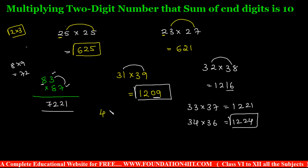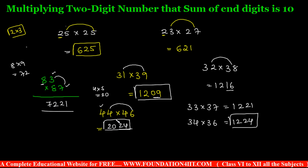For 44 × 46: first digit 4, next is 5, so 4 × 5 = 20. End digits: 4 × 6 = 24. Answer is 2024. Note: this method only works when the starting digits are the same AND the end digits sum to 10. When the sum of end digits is not 10, I will explain those cases in chapter 8.